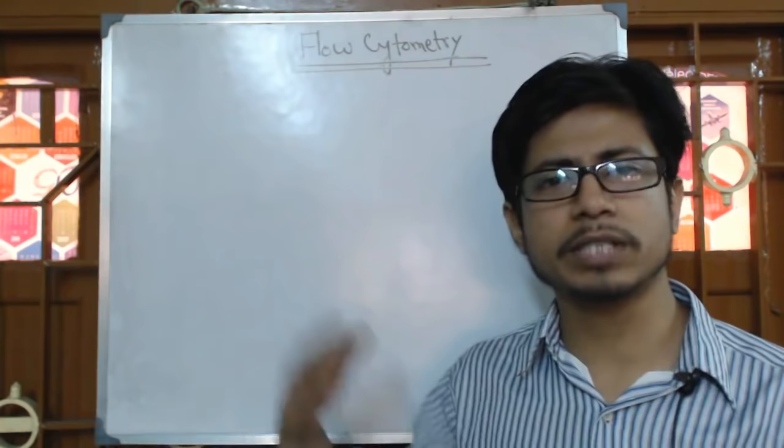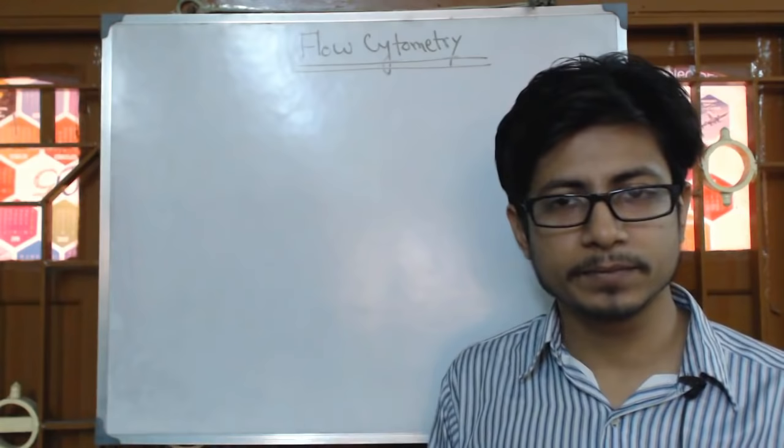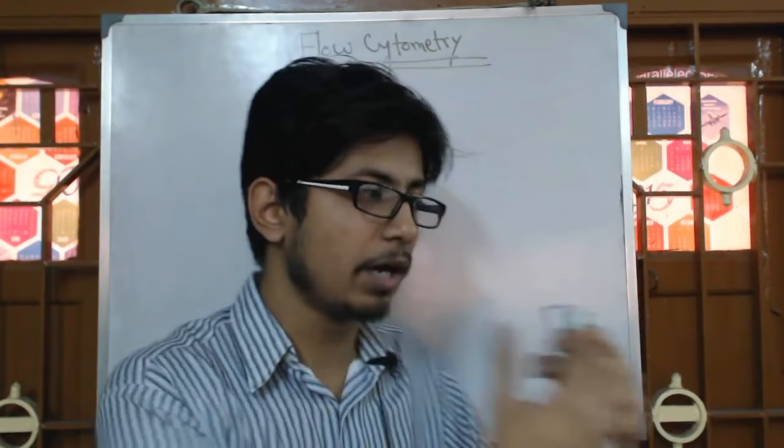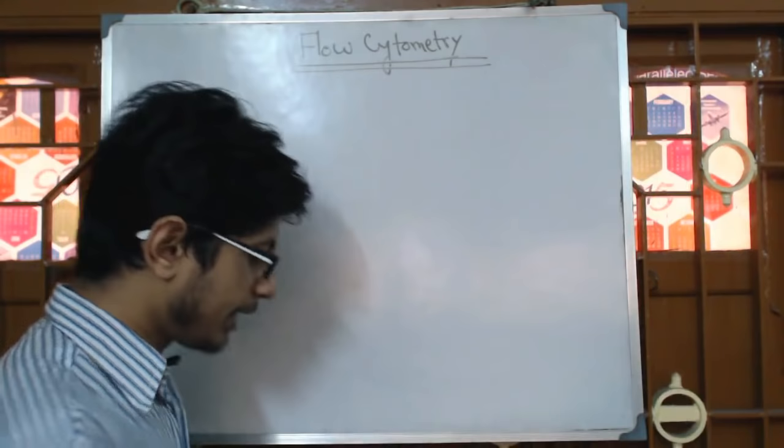Flow cytometry is a technique — a cellular technique or cytological technique — used to detect the number of cells present in a sample or in a mixture. You can count the number of cells using a laser beam.